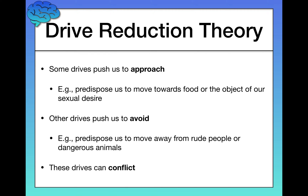Importantly, these drives can conflict with one another. Take, for example, the person you have a crush on — someone you really like and are attracted to. Yes, we have an approach orientation toward that person because we like them and want to get to know them. But we might also have a tendency to avoid — we might be nervous around that person, afraid of getting rejected, and so we don't even ask them out. So drives can conflict in the directions they push us, but the important thing is they are pushing us toward a specific direction, which is what makes it motivation.